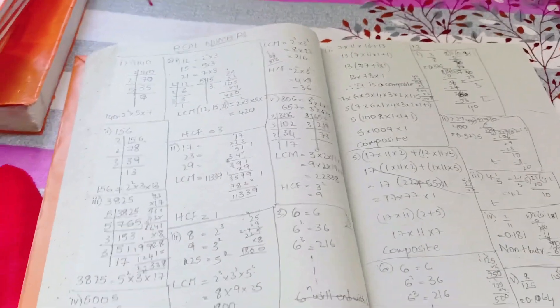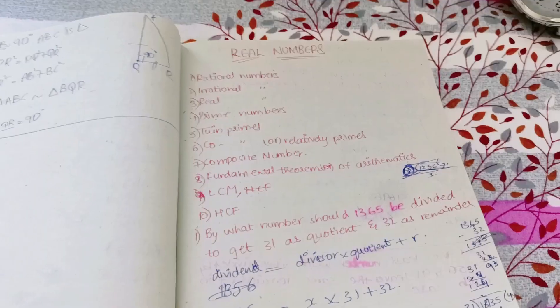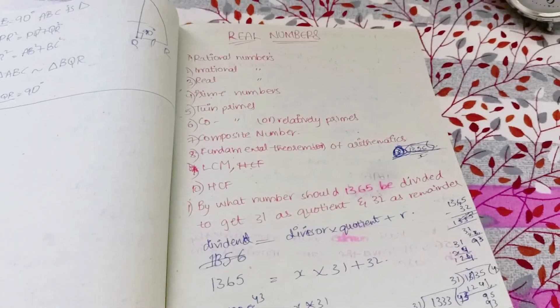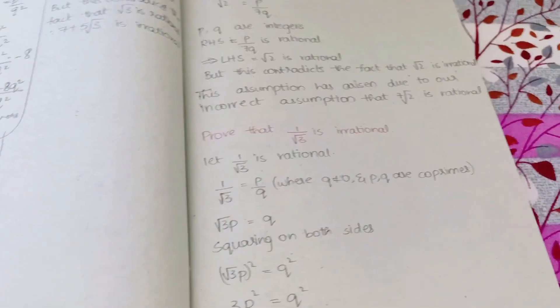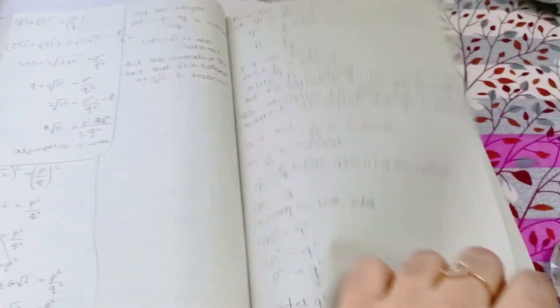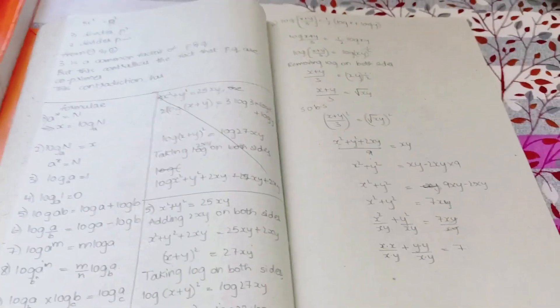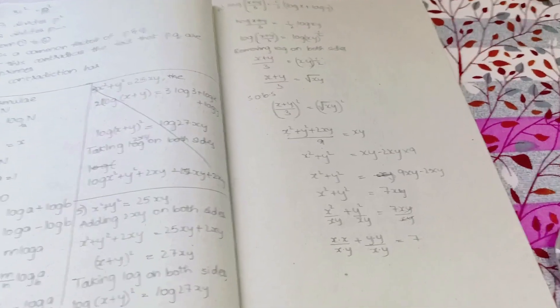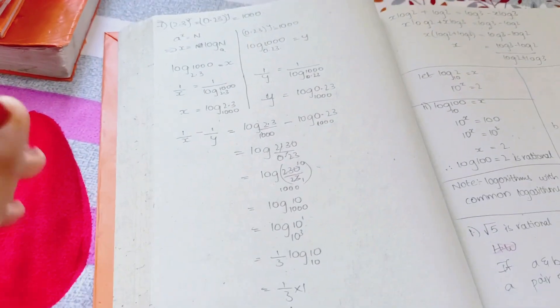Next up we have the first chapter, Real Numbers. Real numbers is a theory as well as problematic chapter, so revise all the definitions carefully. Here is a list of definitions - just pause the video and revise them one by one. Next you can directly go to the exercise problems and practice them roughly. Proofs are also very important. These kinds of problems - prove that a number is rational - will come for eight marks, so don't miss these problems. There's also the concept of logarithms, so one four marks or two marks question will be there from logarithms.